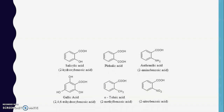In benzoic acid the carboxylic acid group is directly connected to the benzene ring, and other compounds are named as derivatives of benzoic acid. These compounds are very similar to aliphatic carboxylic acids in terms of nomenclature and certain chemical tests. Aromatic acids not only show properties of aliphatic carboxylic acids but also undergo electrophilic substitution reactions characteristic of aromatic compounds.